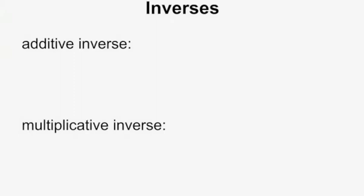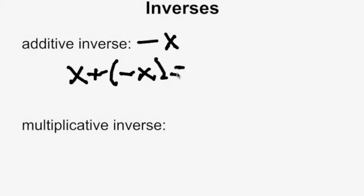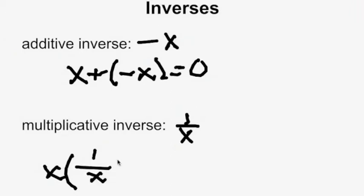The final pair of axioms are the inverses. The additive inverse is negative x: adding x plus negative x gives you 0, which is the additive identity. The multiplicative inverse is 1 over x: multiplying x times 1 over x gives you 1, which is the multiplicative identity.